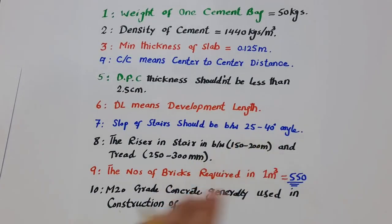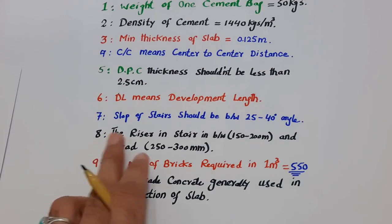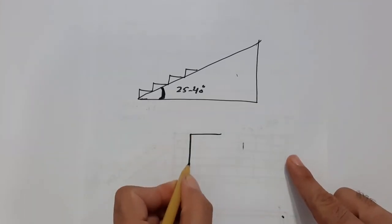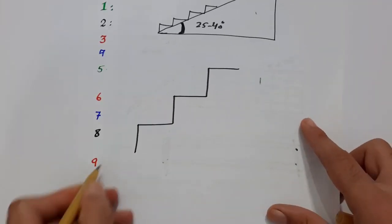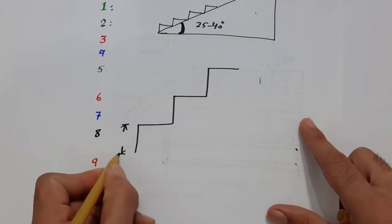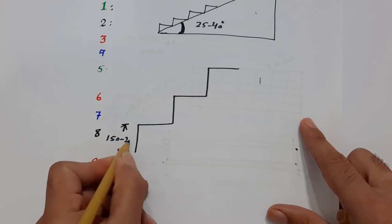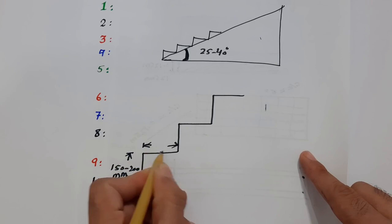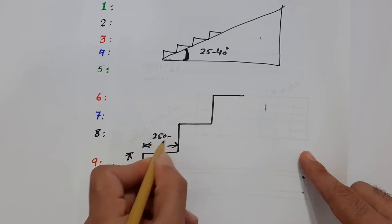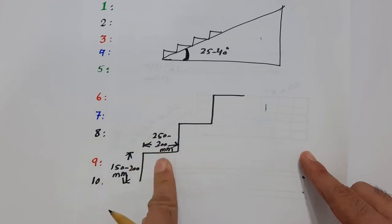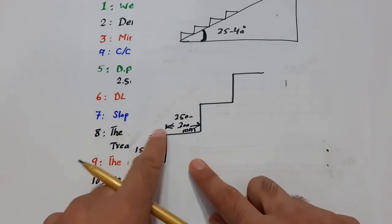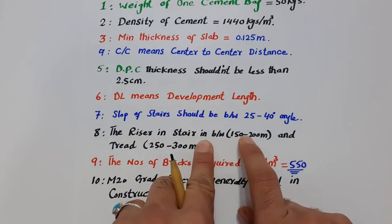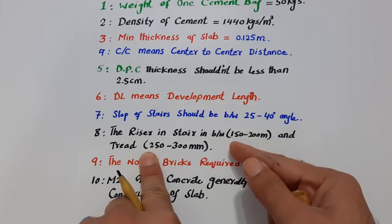The eighth one is riser and tread. The riser — the vertical part of the step — should be between 150 to 200 millimeters in height. The tread — the horizontal part — should be 250 to 300 millimeters. So: riser is vertical, tread is horizontal; riser 150–200 mm, tread 250–300 mm.